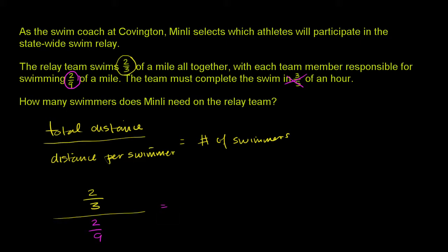Two-thirds divided by two-ninths is the same thing as two-thirds times the reciprocal of two-ninths, which is nine-halves. So this is the same thing as two times nine over three times two.